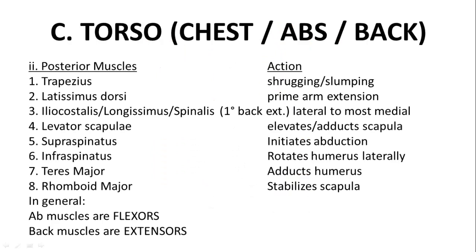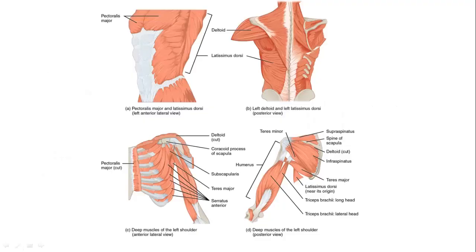For the back of the torso, we have the trapezius again, and the latissimus dorsi — a big muscle for arm extension. Along the spine you have the iliocostalis, longissimus, and spinalis. The levator scapulae elevates and abducts the scapula. You have the supraspinatus, infraspinatus, and teres major — all attached to the scapula — and the rhomboid major runs from the scapula to the spine. In general, abdominal muscles are flexors and back muscles are extensors. On the other side you would have the subscapularis.